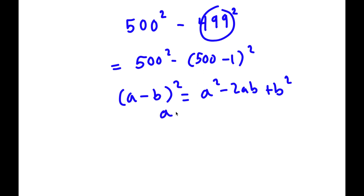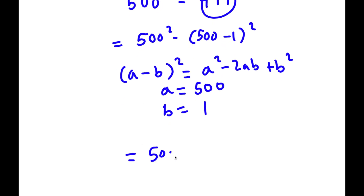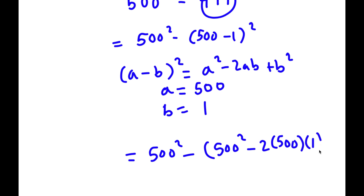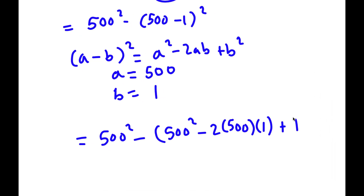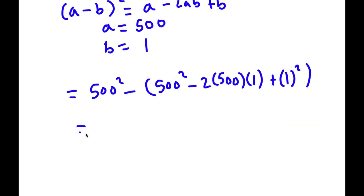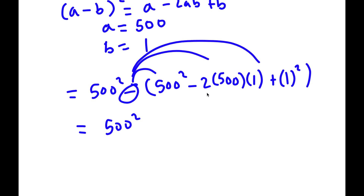In this case, a is going to be 500 and b is going to be 1. So now this is going to equal 500 squared minus (500 squared minus 2 times 500 times 1 plus 1 squared). Now I'm going to simplify this — I have to distribute this negative sign to all my terms, so first off I have negative 500 squared.